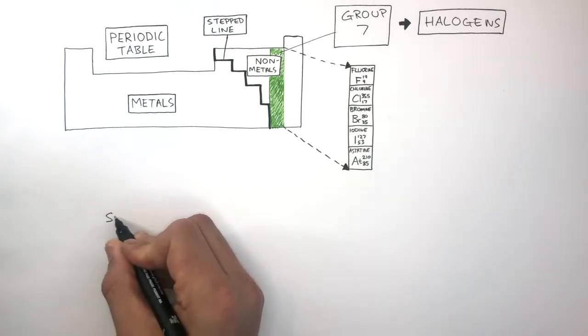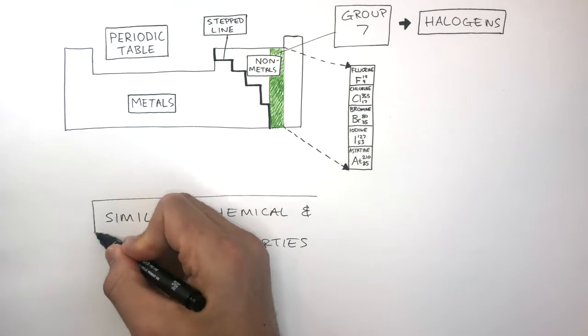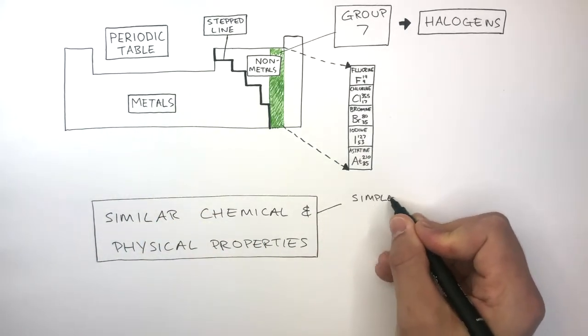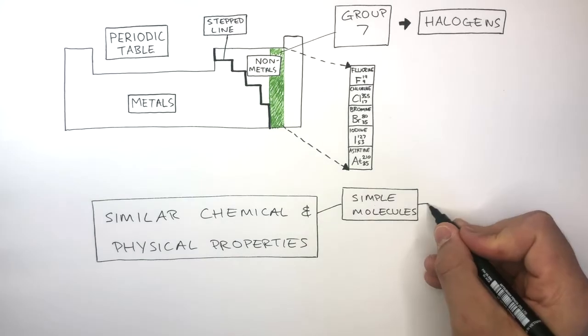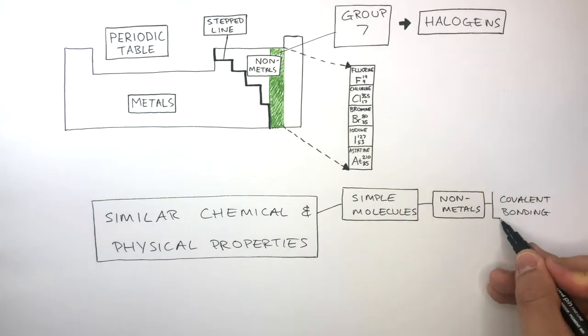The halogens have similar chemical and physical properties. However, this depends on what type of bonding they form. If they form simple molecules, then they will bond with other non-metals where there will be covalent bonds between the atoms.